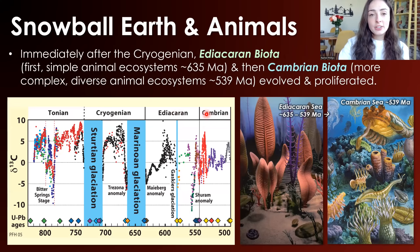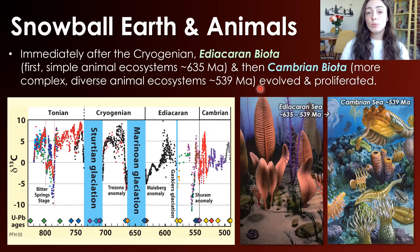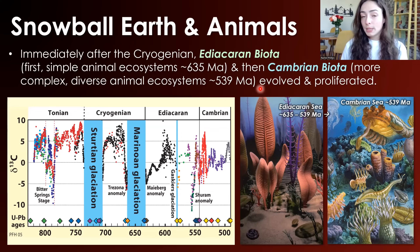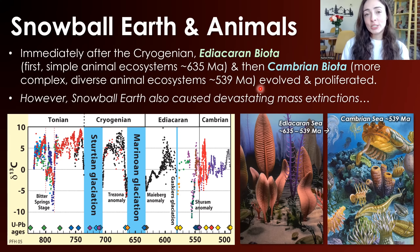As we can see here, the Ediacaran and Cambrian periods directly follow the Cryogenian glaciations, or Snowball Earth event — marking the evolution of the first simple animal ecosystems in the Ediacaran around 635 million years ago, and then the huge explosion of more diverse animal ecosystems in the Cambrian around 539 million years ago. If you want to know how viscosity played a role, check out that linked video. But in this video, we'll be talking about how Snowball Earth also caused major devastation and mass extinctions.